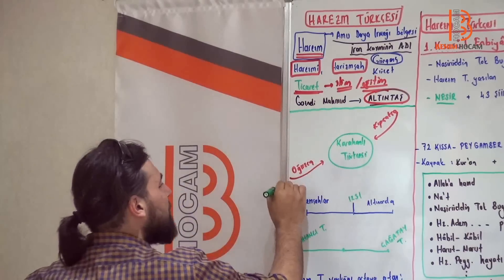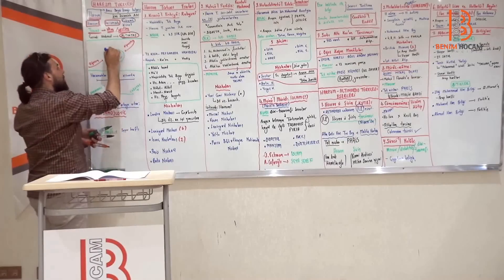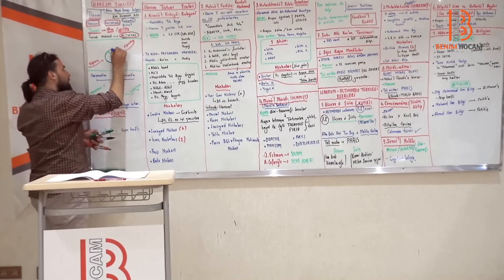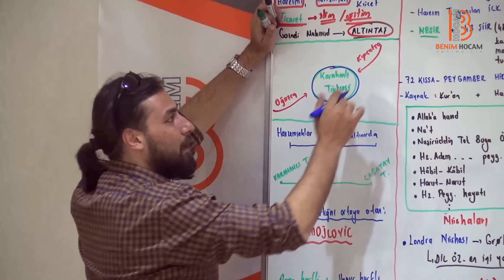Gazne'ni Mahmut burayı fetheder ve idaresini Altıntaş'a bırakmıştır. Şimdi, Karahanlı Türkçesinin merkezinde bir Türkçedir bu. Merkezden hangi Türkçe varmış? Karahanlı Türkçesi. Zaten Karahanlı devamlıdır.